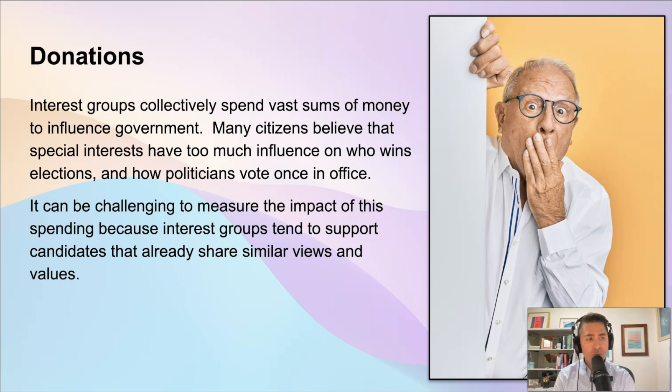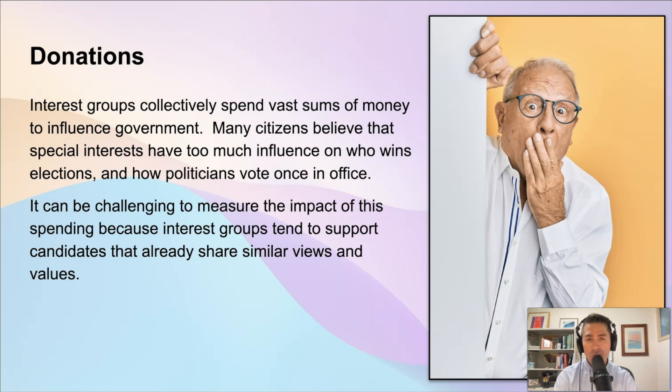In 2022, which was a midterm election year, all the Congress members were up for re-election and a third of the senators. Just among the top 50 categories of interest groups, over $1.2 trillion was donated to congressional campaigns — and that wasn't even in a presidential election year, where we typically see more people turning out to vote and more money being spent. These interest groups are active at multiple levels of government, not just Congress.